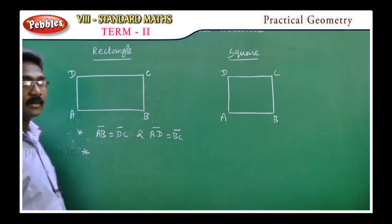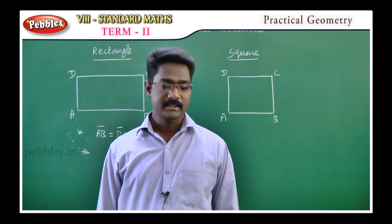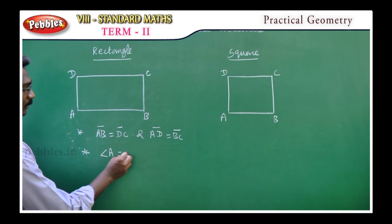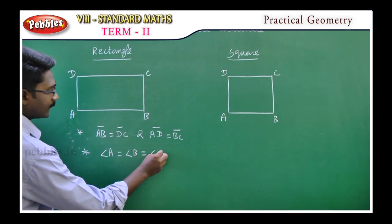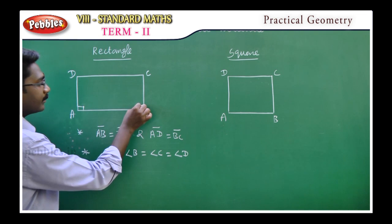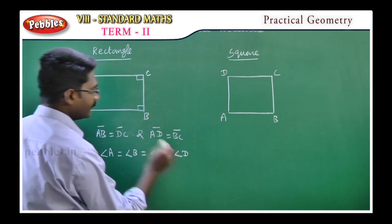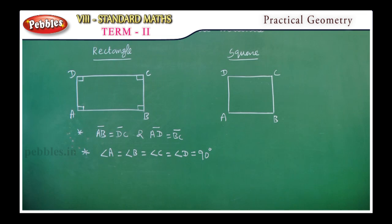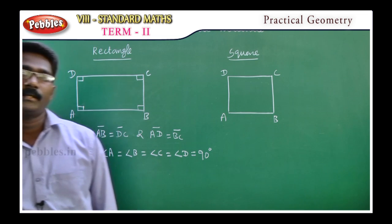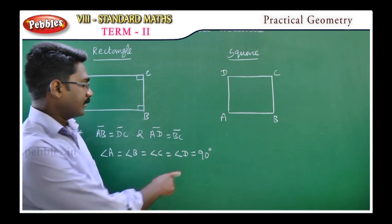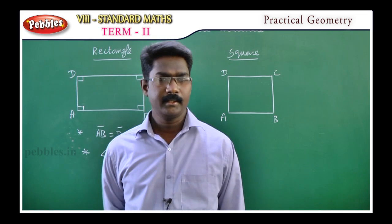So, the first property of a rectangle is: opposite sides are equal. Second property: all angles are 90 degrees — perpendicular — so all four angles are equal, and each angle's value is 90 degrees.